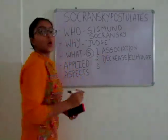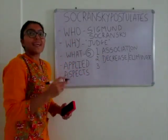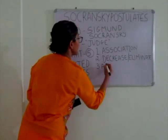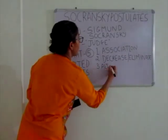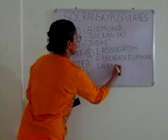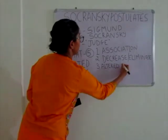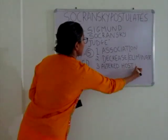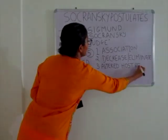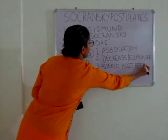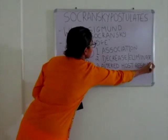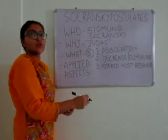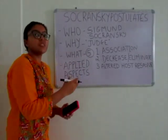Third: altered host response. The microorganisms must be able to alter the host response by affecting immunity — either cellular or humoral. Please remember, these first three postulates — Association, Elimination, and Altered Host Response — are based upon animals or individuals.